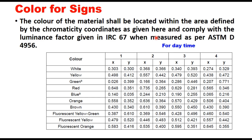The color of the material shall be located within the area defined by the chromaticity coordinates given in this table and shall comply with the luminance factor given in IRC 67, when measured as per ASTM standard. Accurate numerical coordinates for each color can be measured using a spectrophotometer to determine whether the color of the sign meets the color standard. A similar table is available in IRC 67 2022 for nighttime color specification limits.